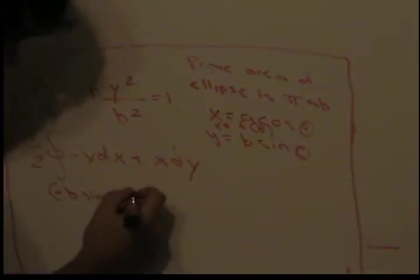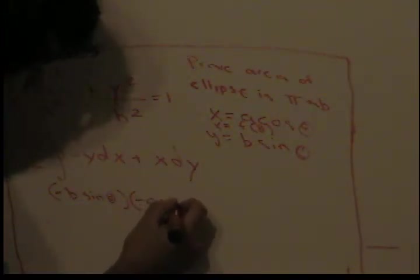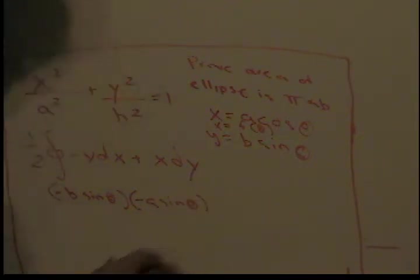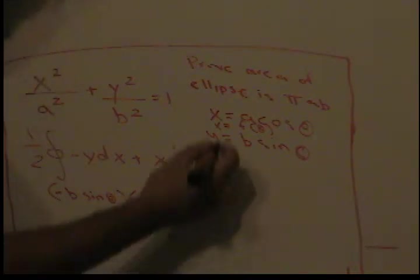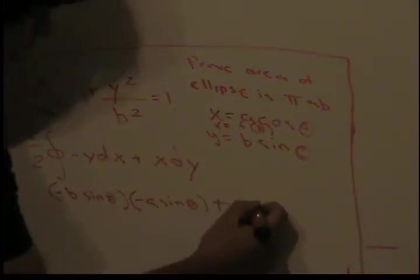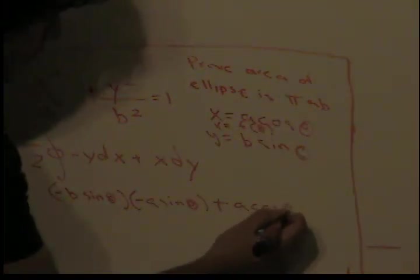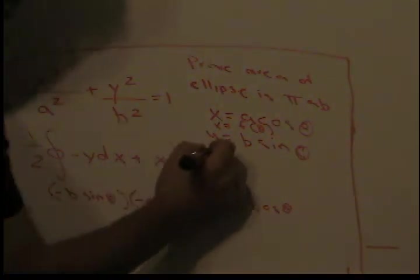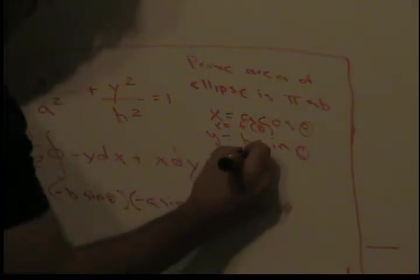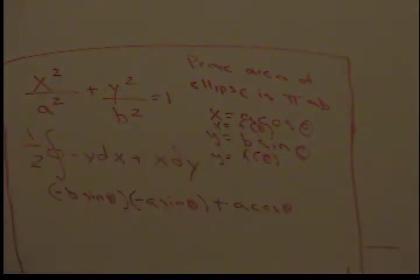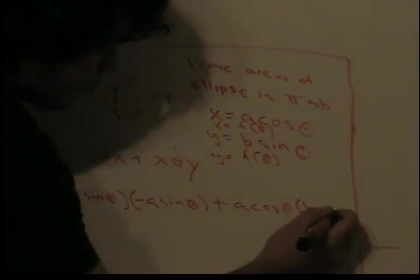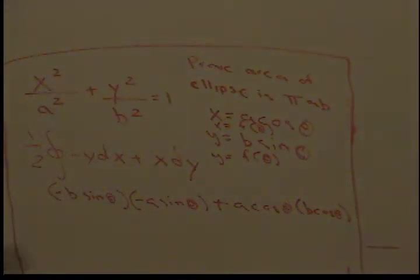Plus x*dy. So plus x as it is: a*cos(θ). dy - same idea, y is a function of theta, so we take the derivative of y with respect to theta. That's just b*cos(θ), so times b*cos(θ).